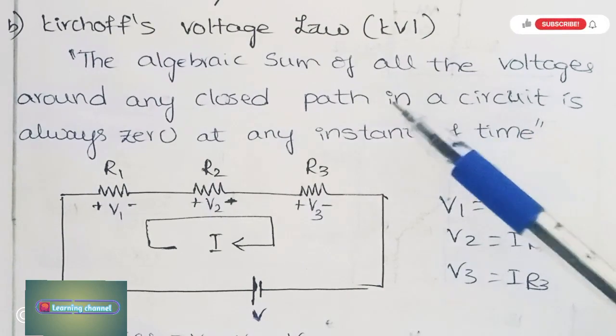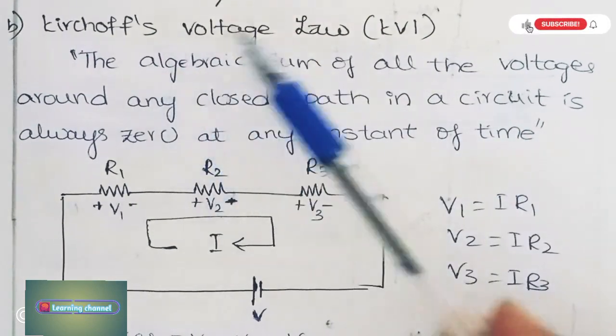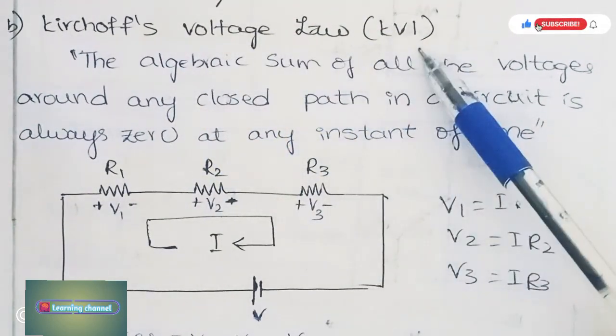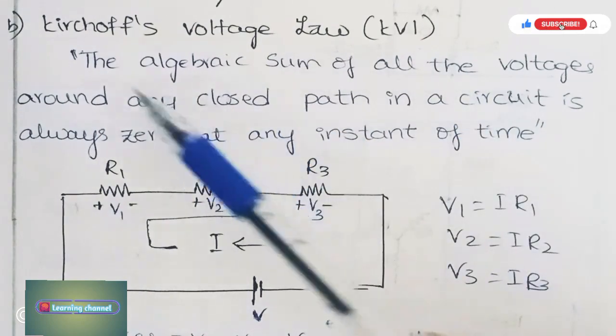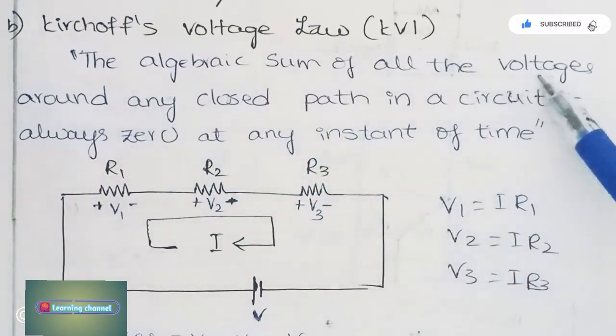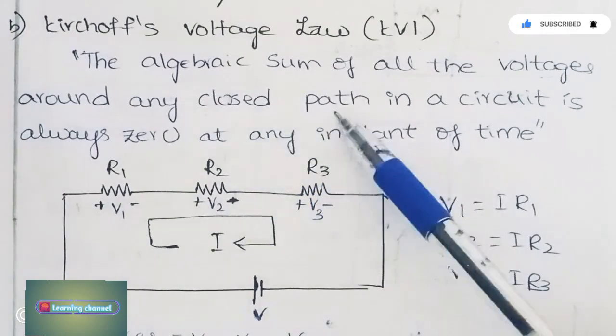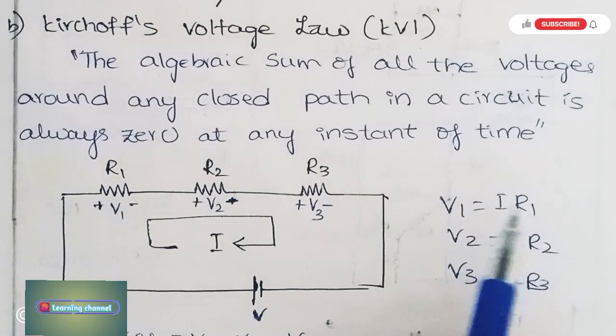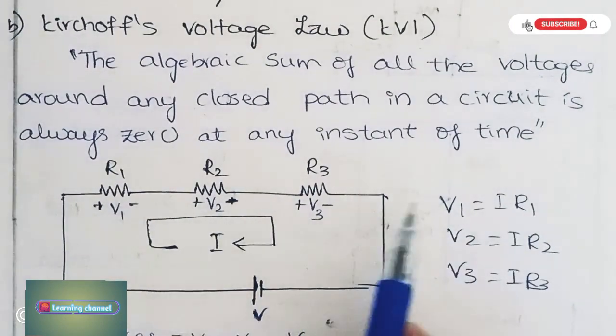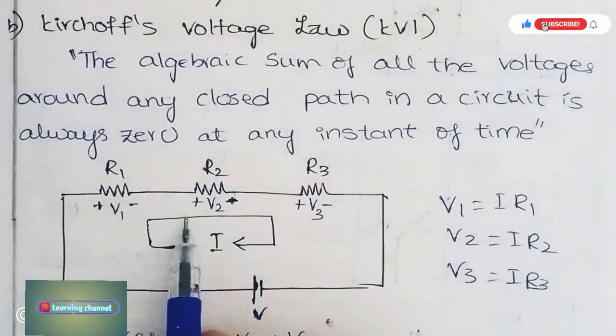Kirchhoff's Voltage Law is also known as KVL. The definition is: the algebraic sum of all the voltages around any closed path in a circuit is always zero at any instant of time. Here we have to see that it should be a closed path.